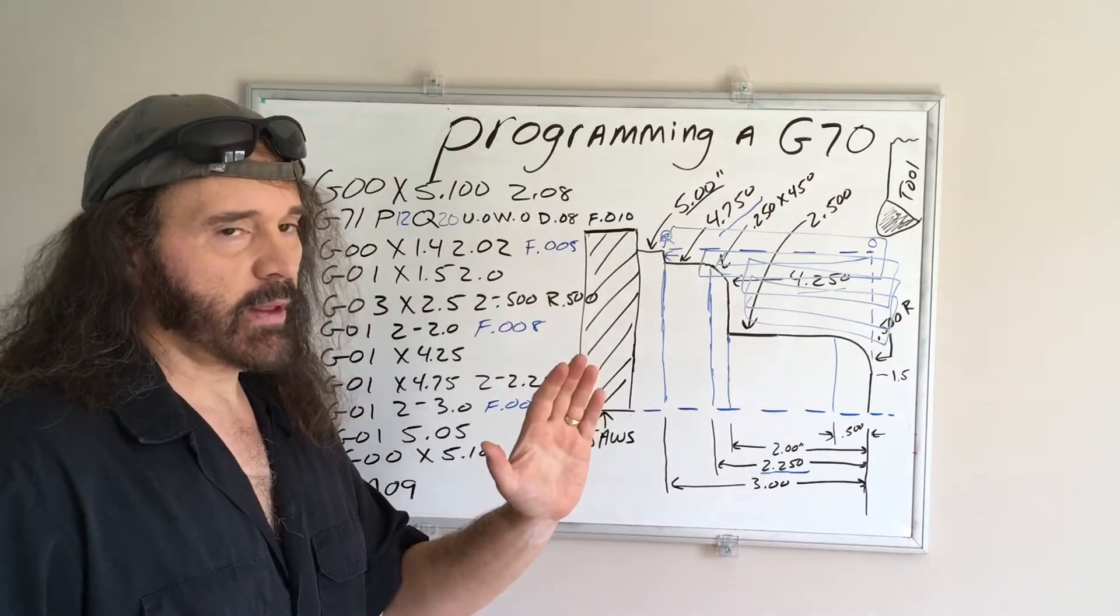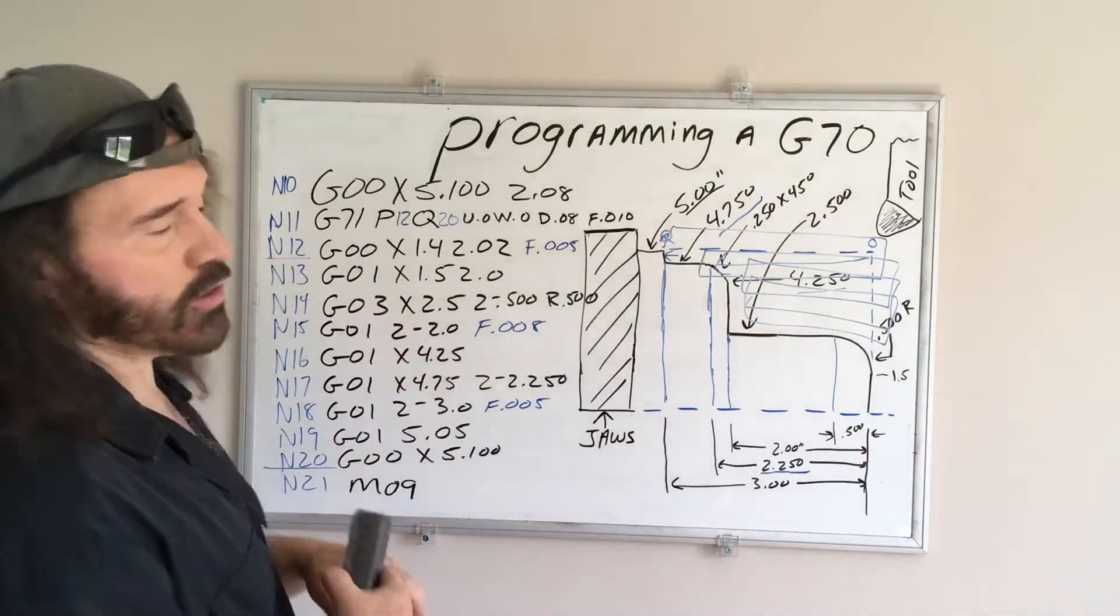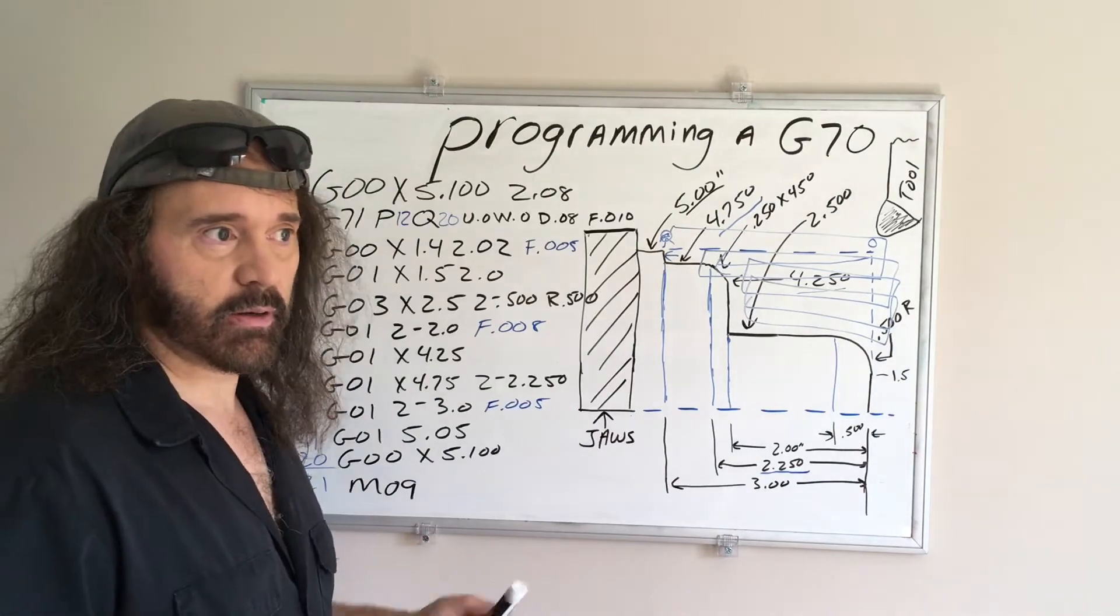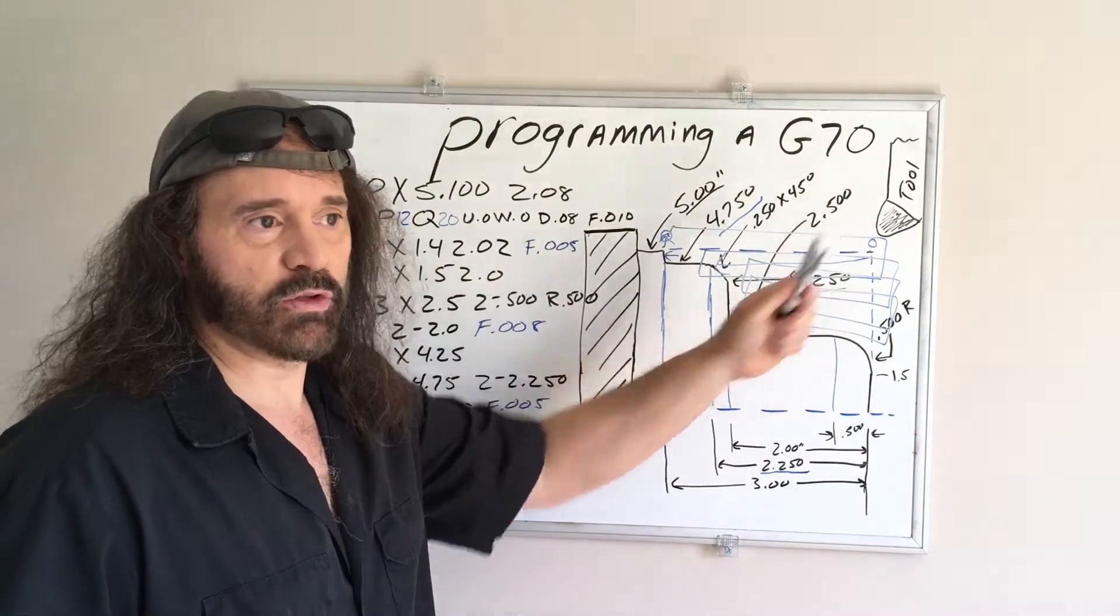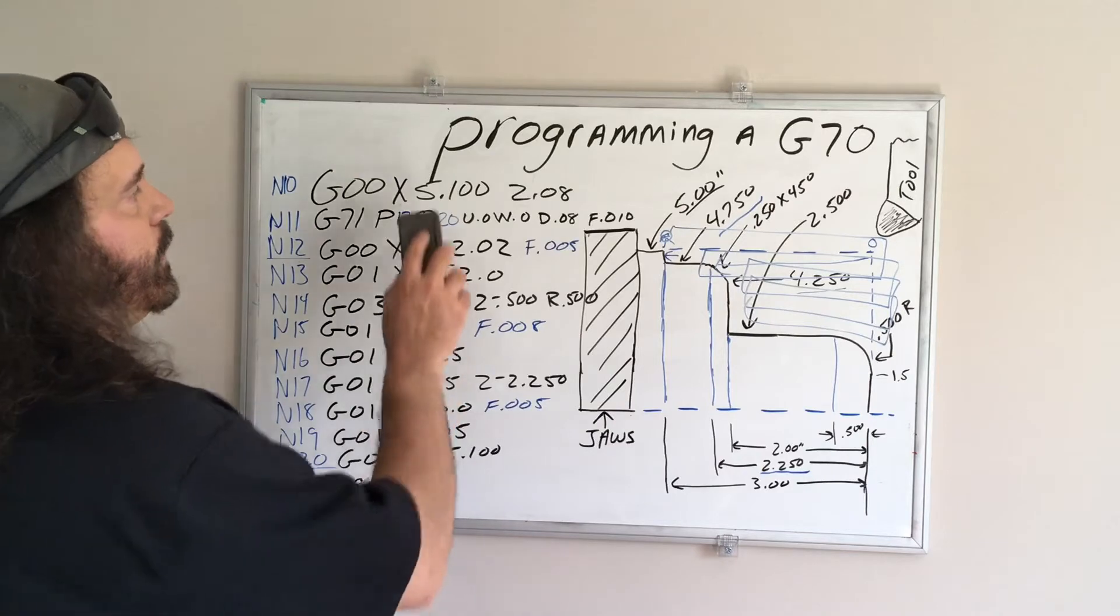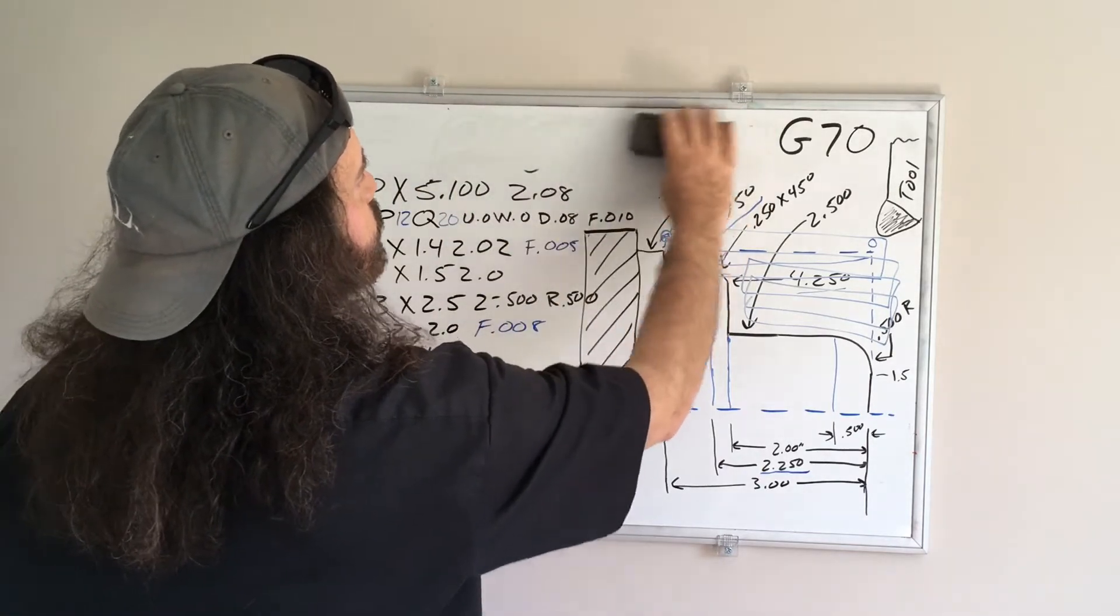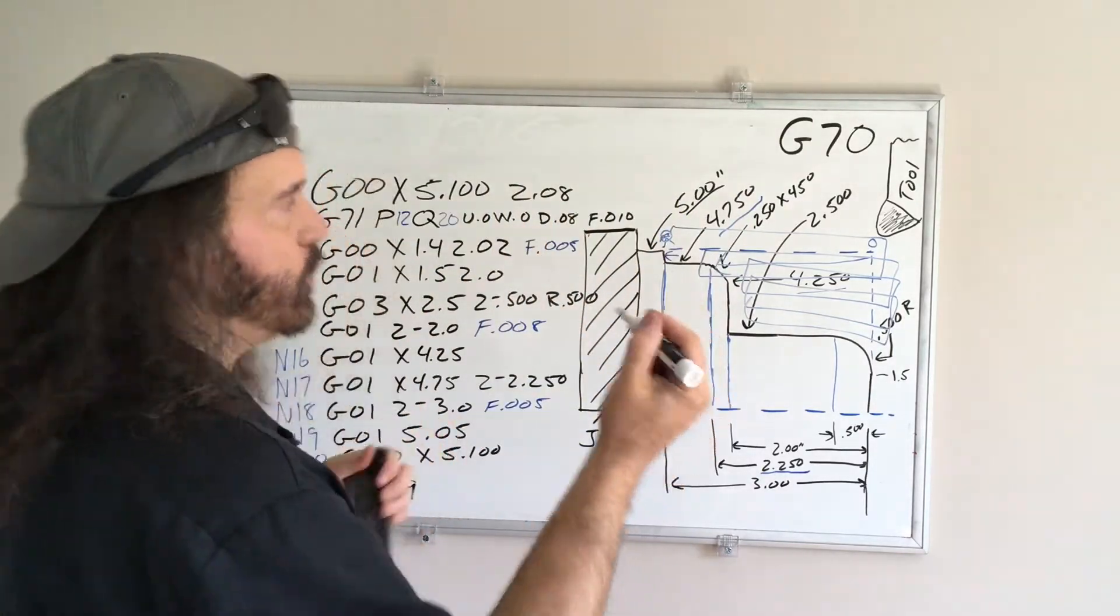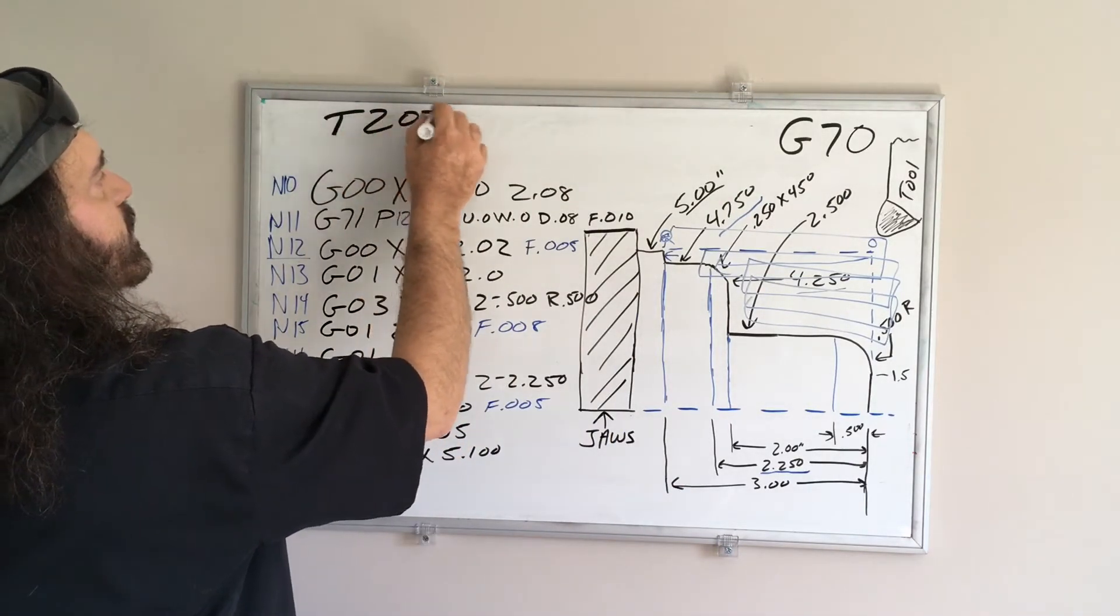So what we're going to do, if you didn't see the beginning of my previous video I encourage you to go watch it, you're going to call up your next tool to do a finish pass. So what you're going to do, I'm going to get rid of this, let's say your next tool is Tool 2, Offset 2.